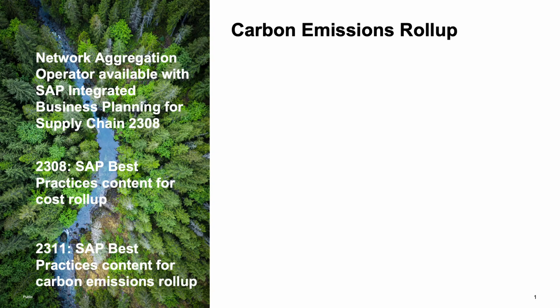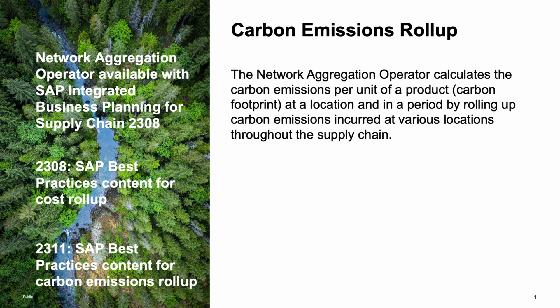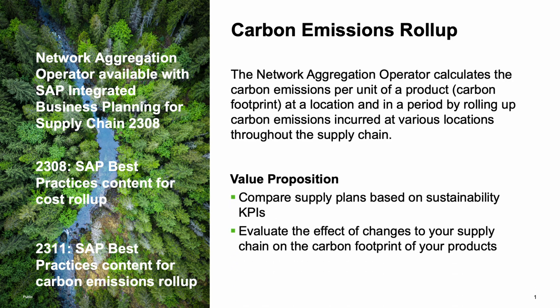In 2308 we introduced the network aggregation operator, which you can use to calculate costs or carbon emissions. The carbon emissions are calculated for each product unit at a given location and within a given period by rolling up the carbon emissions at various locations in your supply chain. You can then compare different supply plans based on your sustainability KPIs.